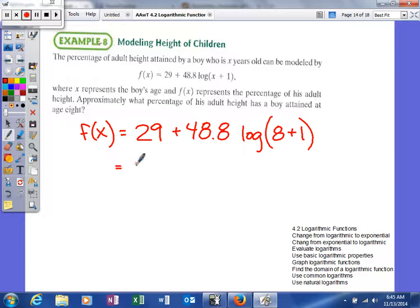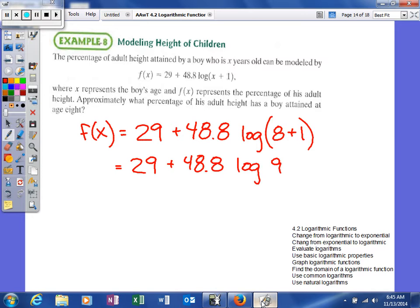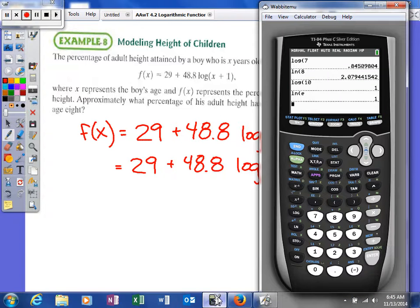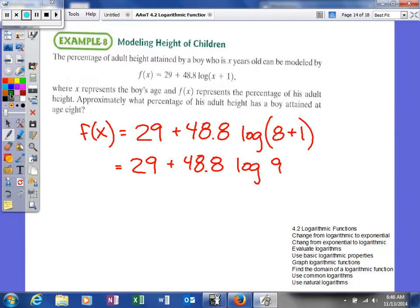We need to make sure we use order of operations. So I'll say plus 48.8 and then log of 9. I'm going to hit the calculator button. So I'll do the log of 9 times 48.8 and then plus 29. So it turns out it's going to be roughly, we'll just round it up. So we'll say it'll be roughly 76%. So at age 8, you're roughly 76% of your adult height.